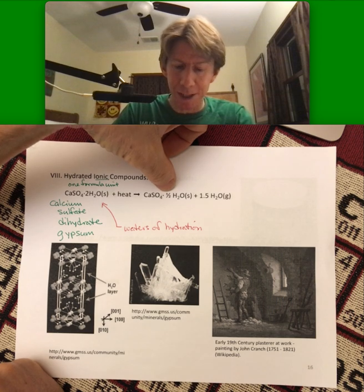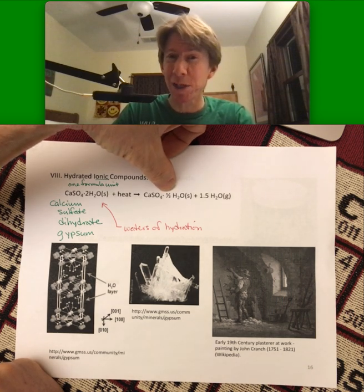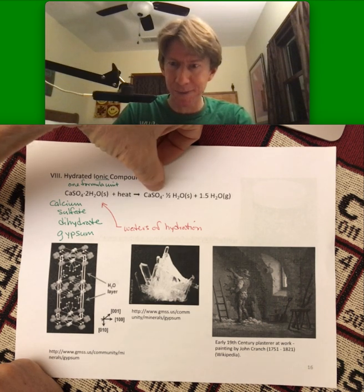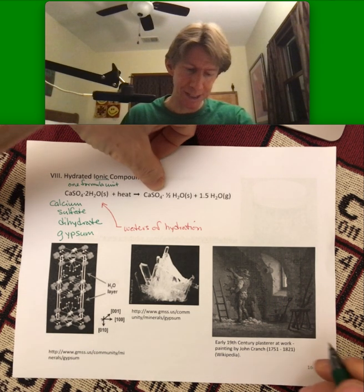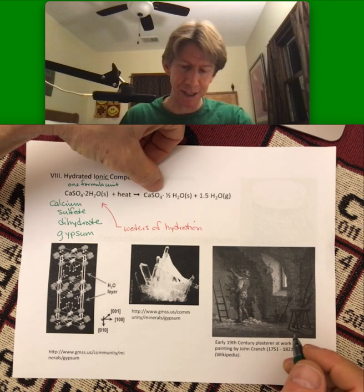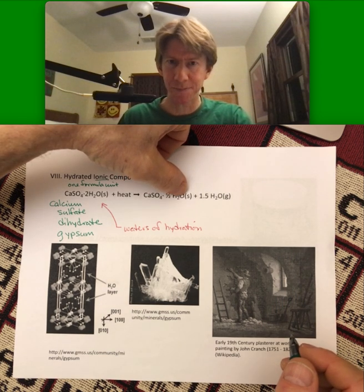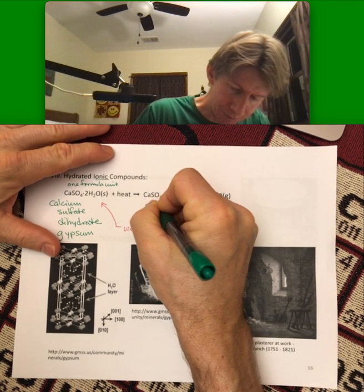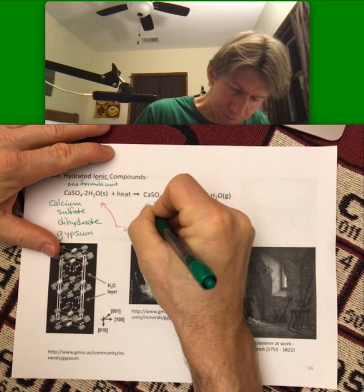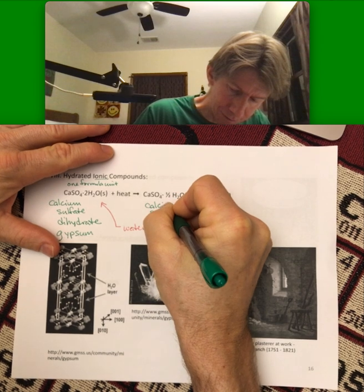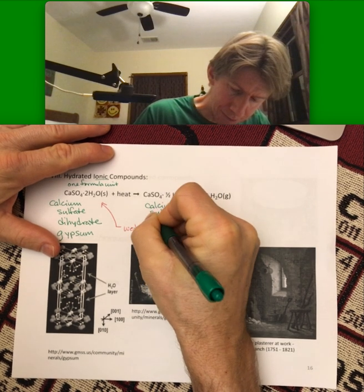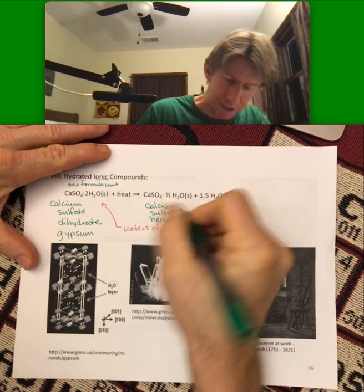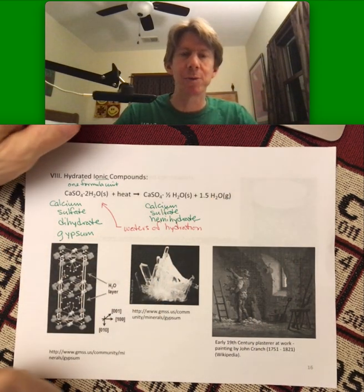This new substance is actually the only place I've ever seen a half in a chemical formula. The name of this is calcium sulfate hemihydrate — that's why we gave you that 'hemi' prefix. Hemihydrate is one word, just like dihydrate is one word as well.